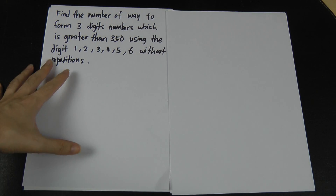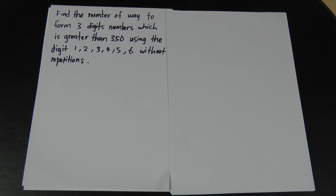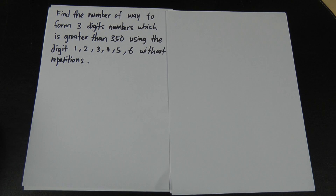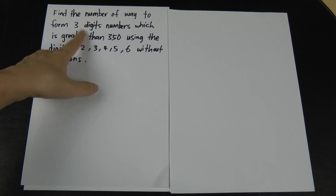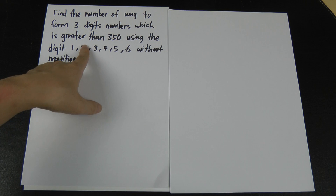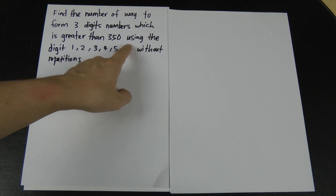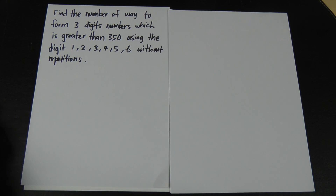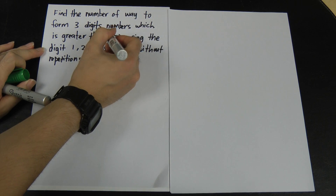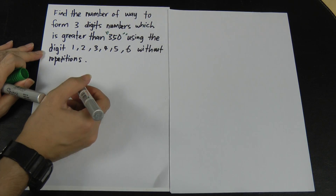A student recently asked me about this permutation question, so I decided to make a short tutorial covering two permutation questions. For the first one, the question asks you to find the number of ways to form a three-digit number greater than 350 using the digits 1, 2, 3, 4, 5, 6 without repetition. The keyword here is 350.